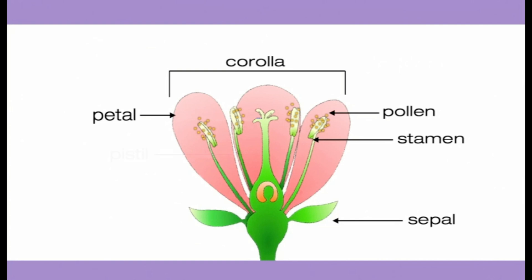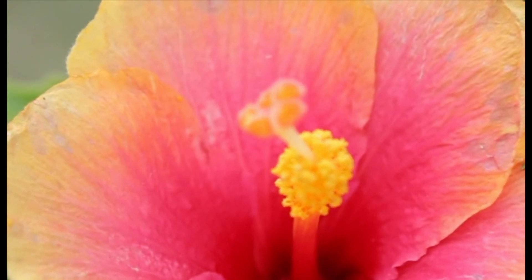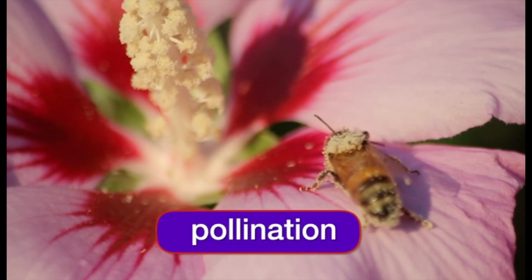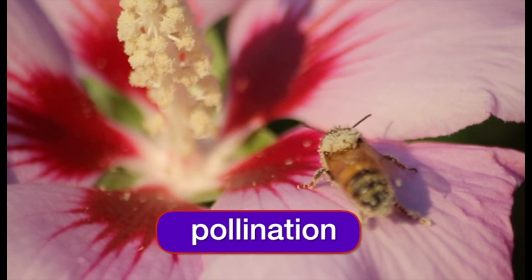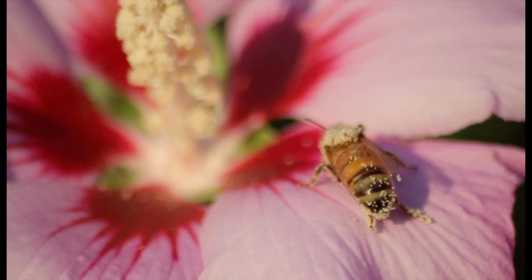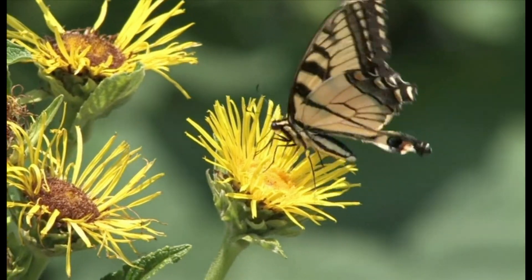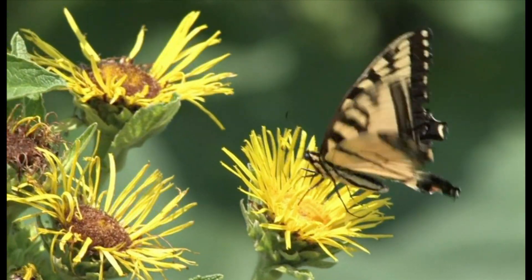Another important part needed for the plant's reproduction is called the pistil. In order for flowering plants to reproduce or make new plants, the pollen from the stamens must travel to the pistil. When the pollen arrives and sticks to the pistil, we call that process pollination. Sometimes plants need help in the pollination process, getting the pollen from the stamen to the pistil.